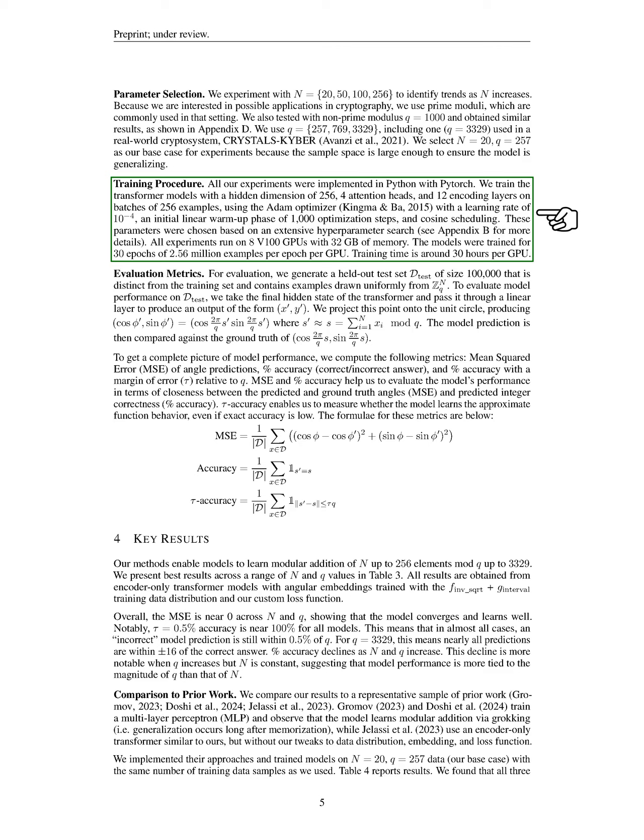Our experiments run on 8 V100 GPUs, each with 32 gigabytes of memory, and we train the models for 30 epochs, processing 2.56 million examples per epoch per GPU, resulting in approximately 30 hours of training time per GPU.